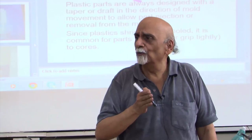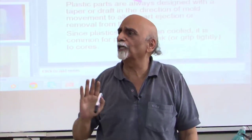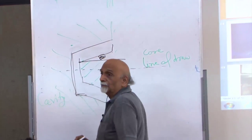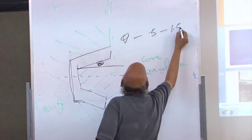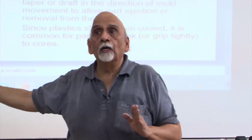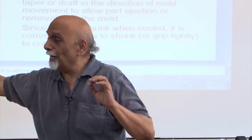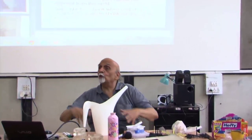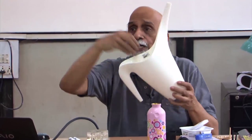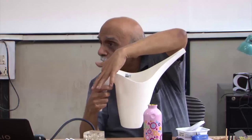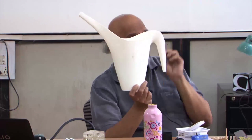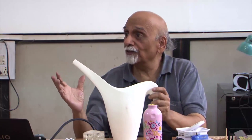It should be from 0.5 to 2 degrees — 1.5 to 2 degrees — meaning this angle theta. Draft is a must. It makes one side bigger than the other side. I can make use of this. Is there any undercut? There is none. This is the cavity side, this is the core side — there is no issue. Nice product, perfectly designed. The draft can be used very intelligently.